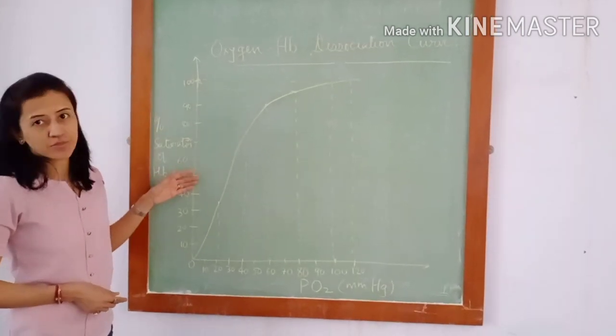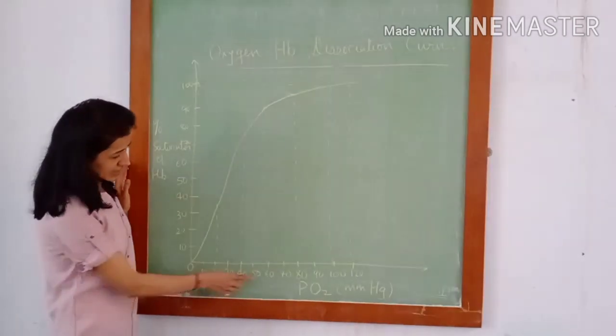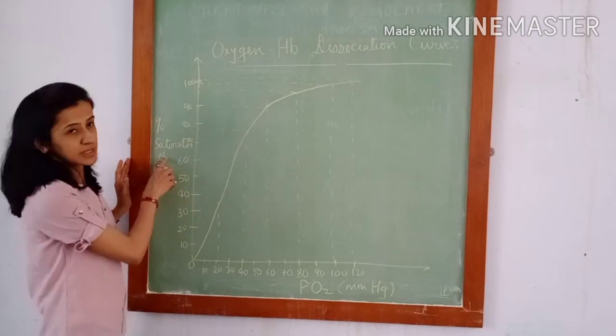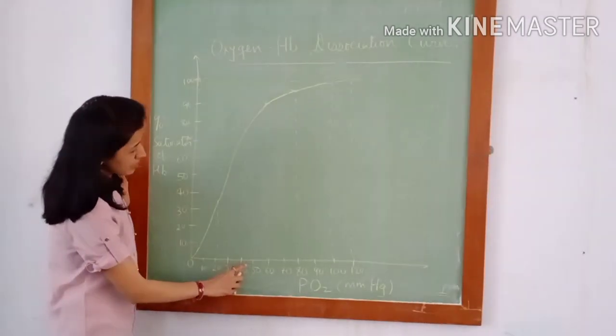Let us discuss how to draw the curve. You can see here, at PO2 20 mmHg, percentage saturation is 35%.